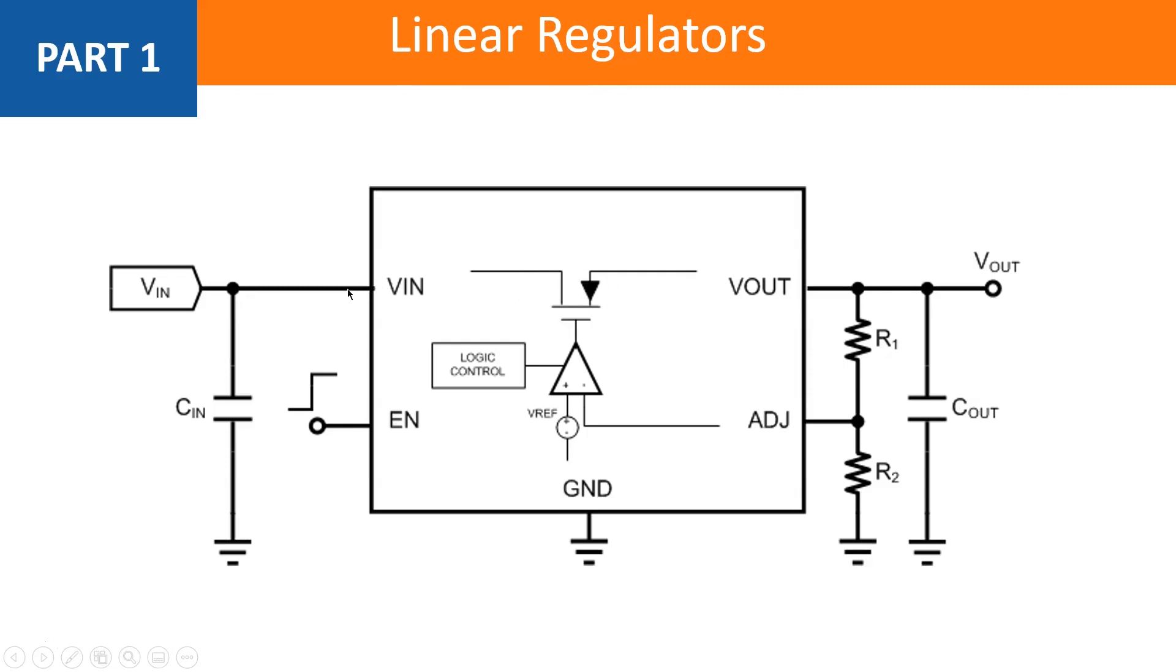It controls essentially how much current is allowed to pass from the input to the output through this switch. One side of the transistor goes to VIN, the other side goes to VOUT, and the whole regulator works by controlling current through this switch as part of a feedback network.